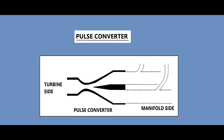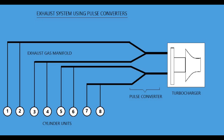Pulse converters are used in pulse exhaust systems, with exhaust pipes connecting to the turbine through these devices. At part load conditions, exhaust pressure at the turbine entrance is less. The pulse converter partly converts kinetic energy into pressure energy but still retains the pulse energy entering the turbocharger. Its design minimises the transmission of pressure pulses from one exhaust pipe to another, preventing one cylinder's exhaust from disrupting another cylinder's scavenging process. These devices are mostly used in medium speed engines, specifically 4, 8, and 16 cylinder engines.